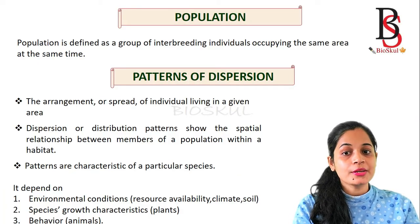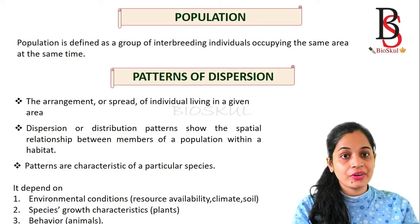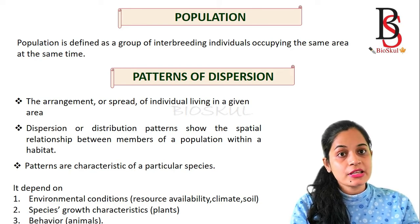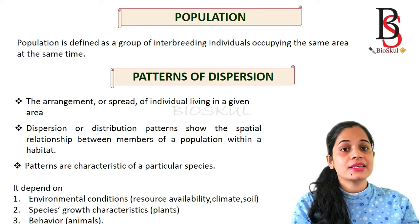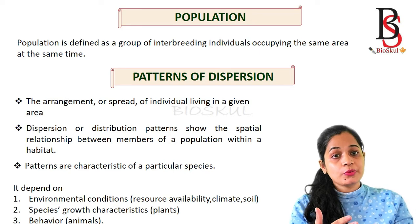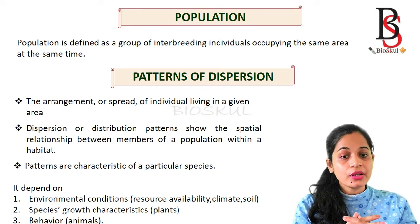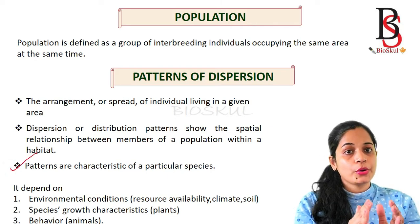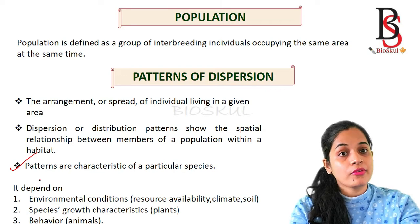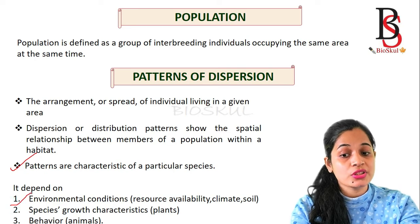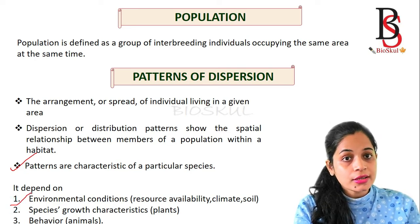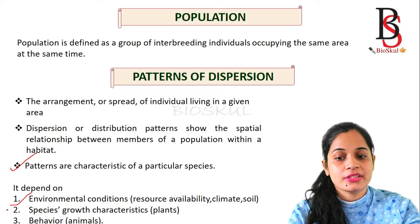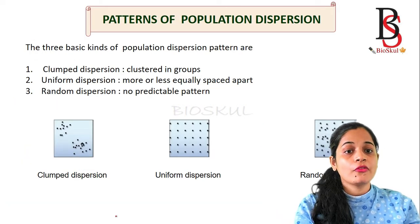What is population? Population is defined as a group of interbreeding individuals occupying the same area at the same time. The pattern of dispersion is the arrangement of individuals in a given area. The dispersion or distribution pattern shows the relationship between members of a population within a habitat. Patterns are characteristics of a particular species and depend on environmental conditions such as availability of resources, climate, and soil condition, as well as species growth characteristics and animal behavior.